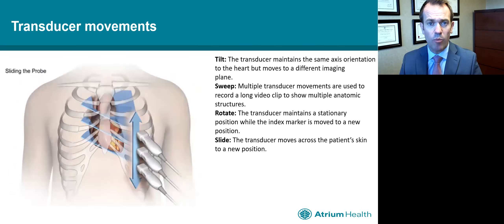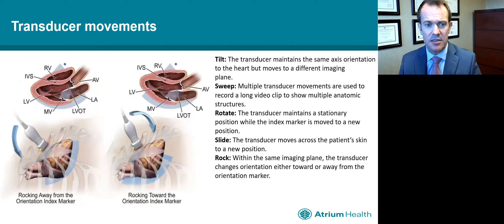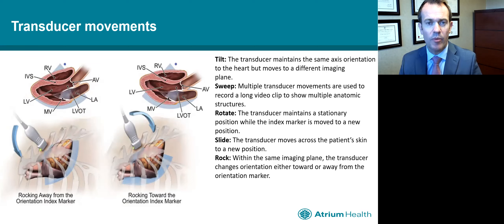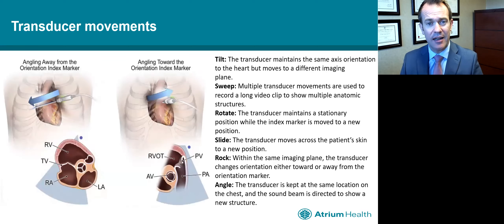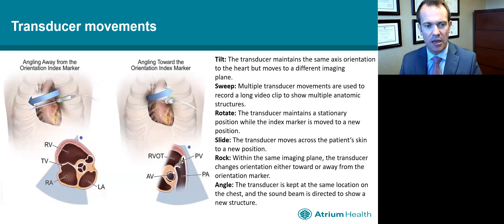Sliding the probe refers to moving up or down in intercostal space. Rocking the probe tries to center the view into the center of the heart by moving the probe either towards the index marker, while angling the probe is a little bit like rocking but a more complex movement where we can focus in on different areas of the heart.